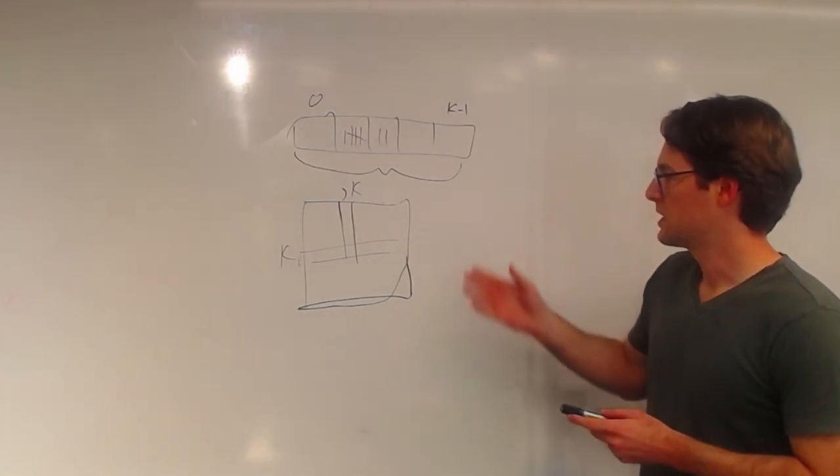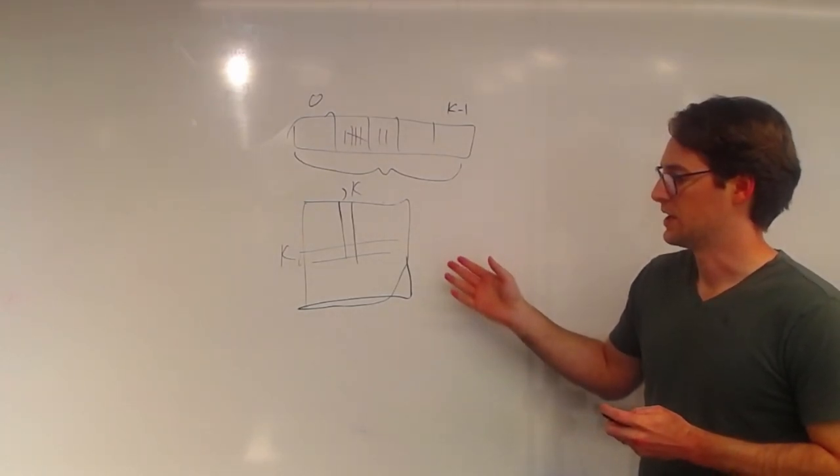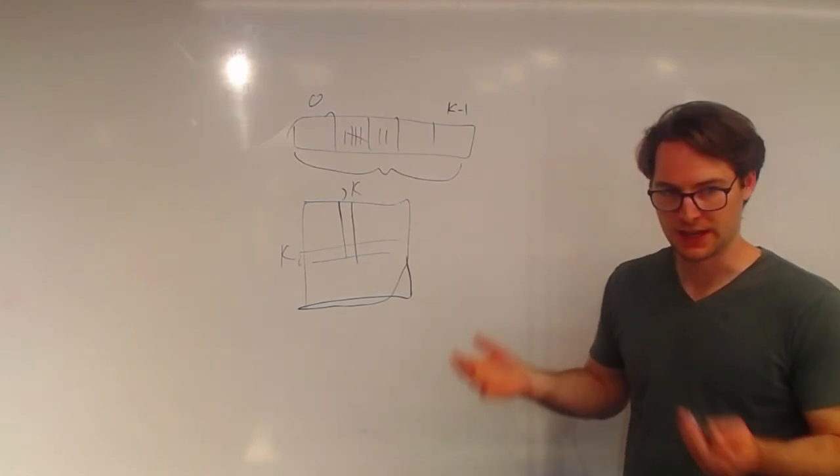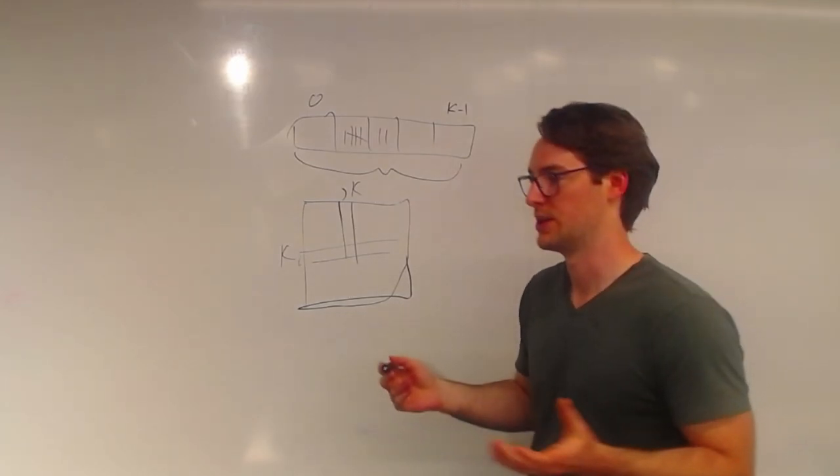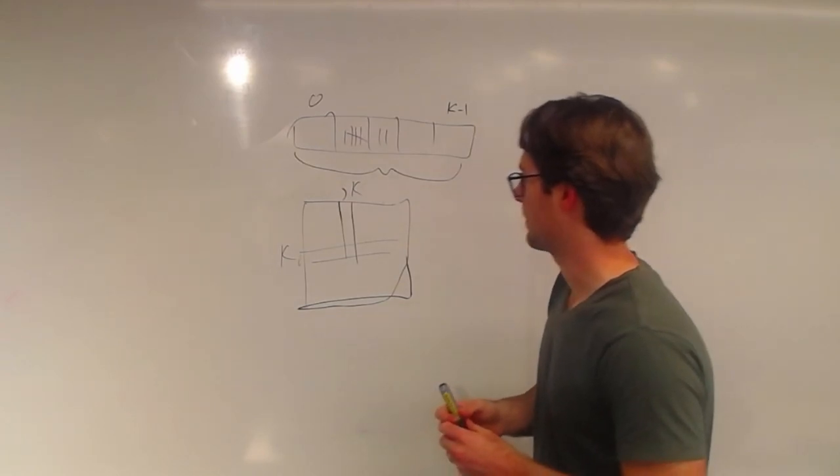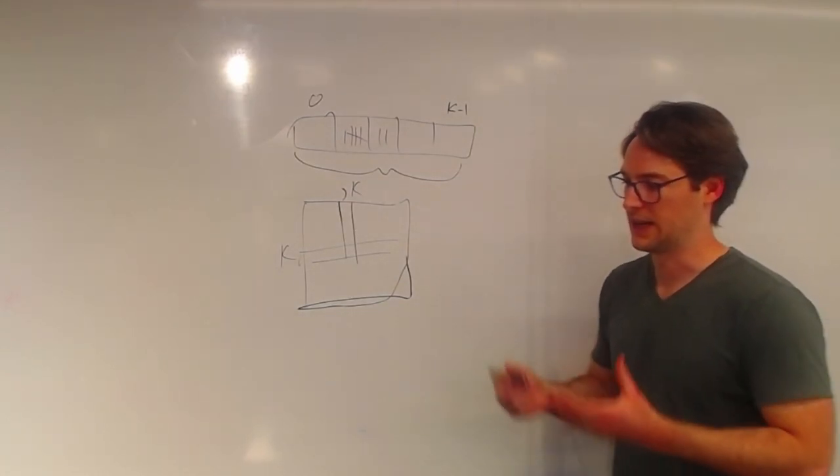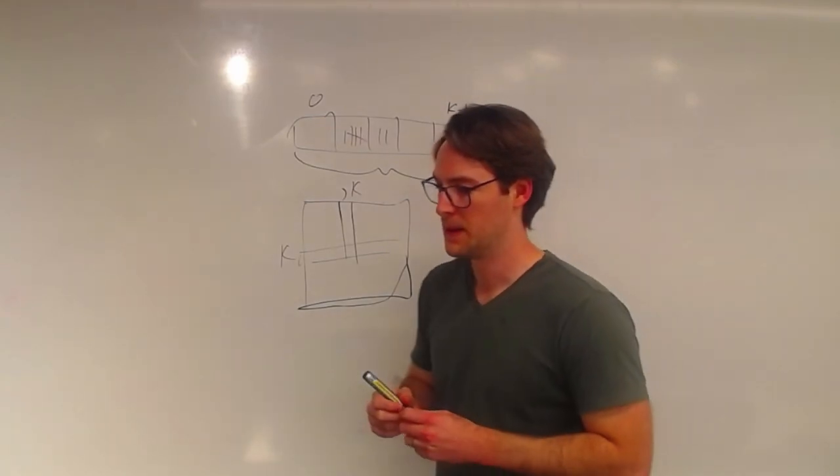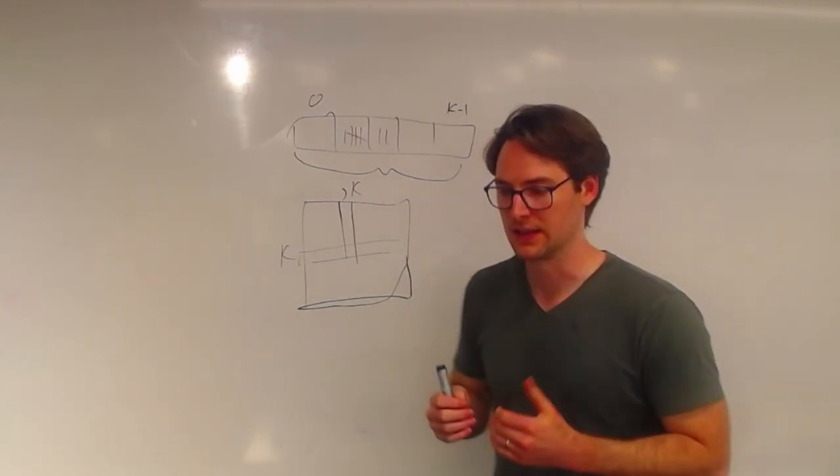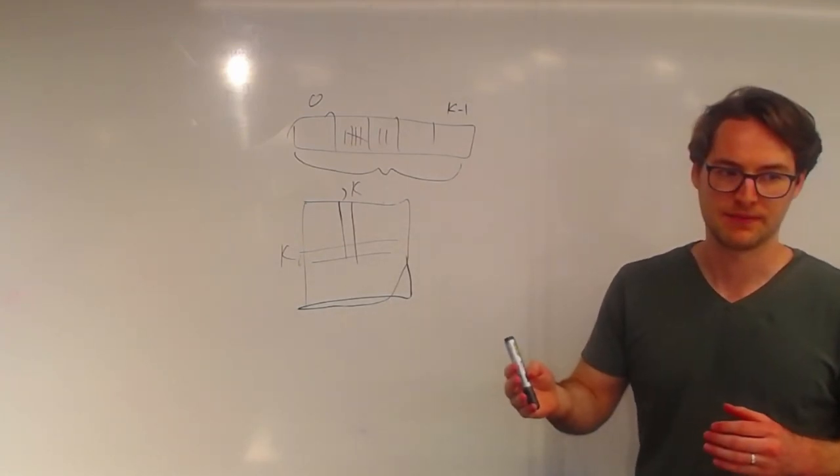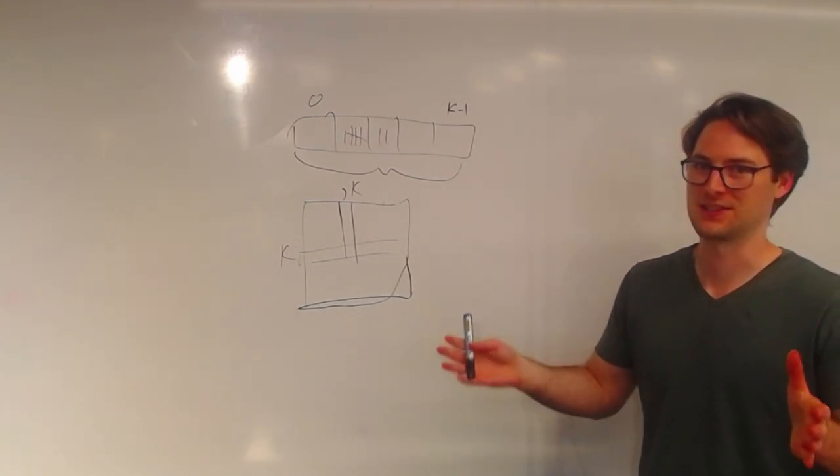So we can speed up this matrix exponentiation by instead using two vectors. So it becomes vector exponentiation where one of the vectors just represents, so each index represents, like say it's index i, it represents number of ways of getting to a residue of i. And then you can exponentiate that vector using itself and do this vector exponentiation.